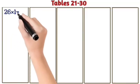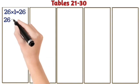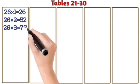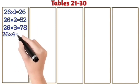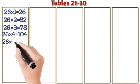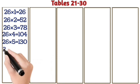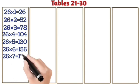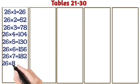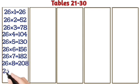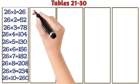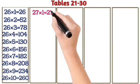26 ones are 250. 26 twos are 52. 26 threes are 78. 26 fours are 104. 26 fives are 130. 26 sixes are 156. 26 sevens are 150. 26 eights are 182. 26 eights are 208. 26 nines are 234. 26 tens are 260.